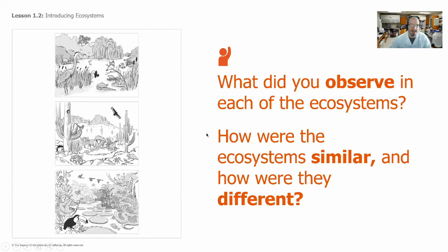The last thing you do once you've made all those observations of the three different ecosystems is answer the question: how were the ecosystems similar and how were they different? Once you're done, go ahead and submit your Google Classroom assignment. In the next lesson we're going to read about what all ecosystems have in common, so I'll see you on Thursday. Have a good one!